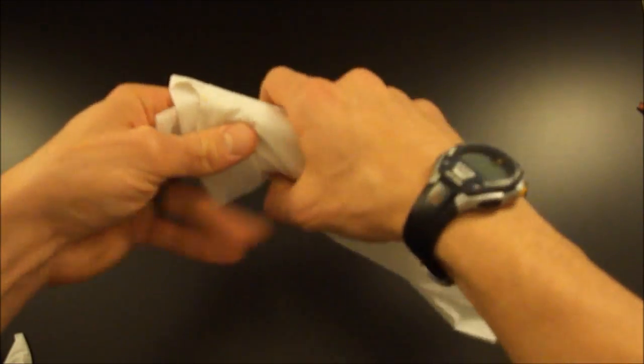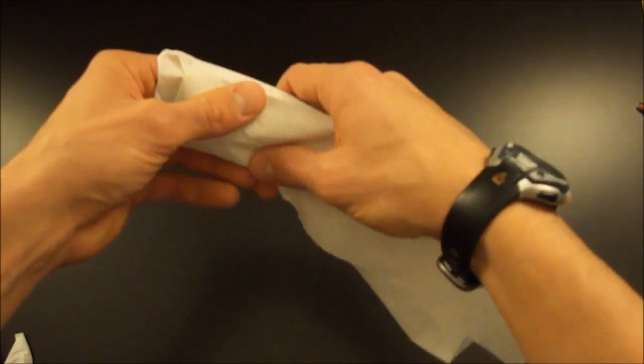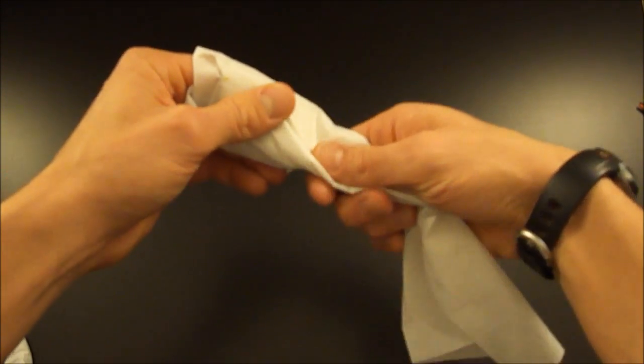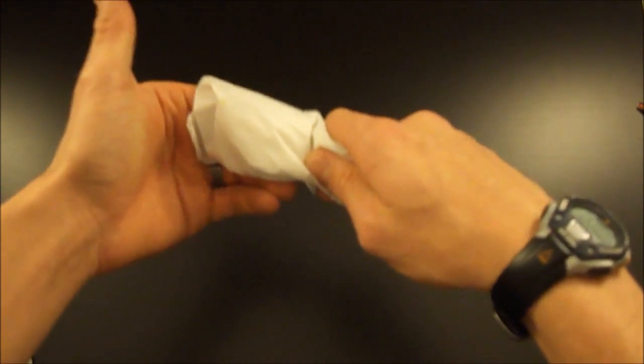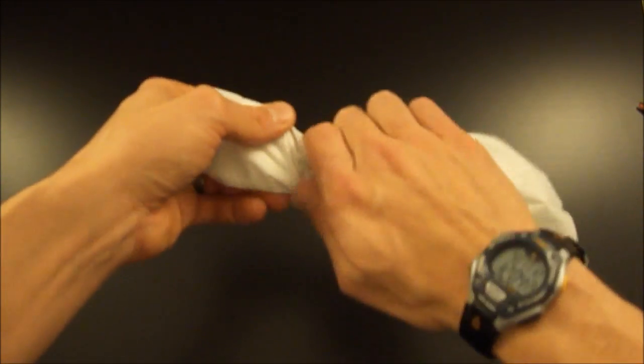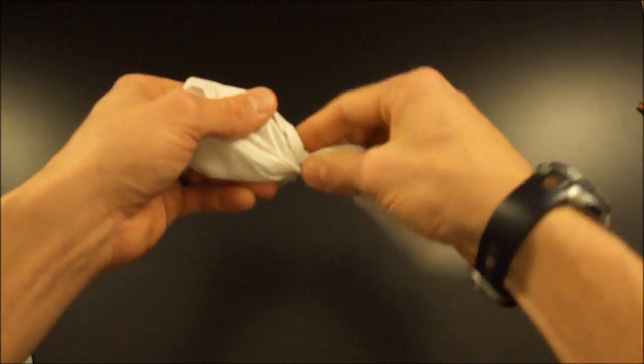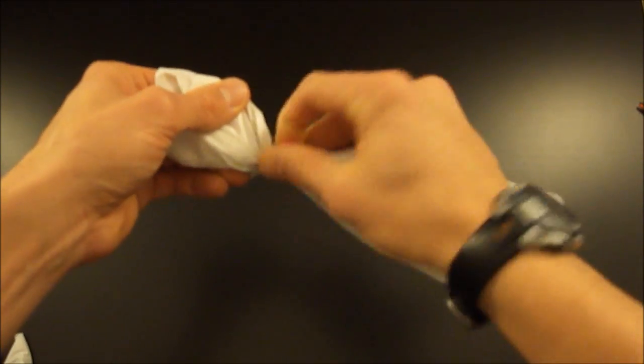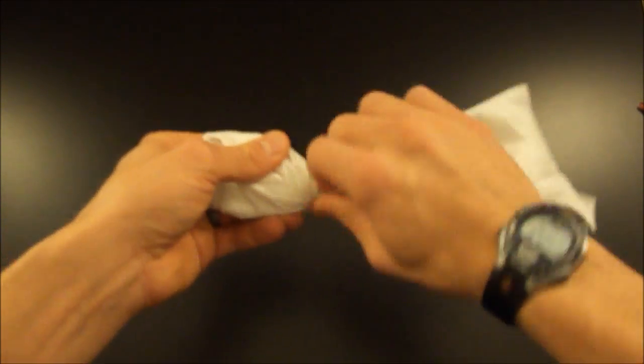You're going to be pulling it down, making sure everything is relatively even. I mean, it is a napkin, so it isn't going to be perfect, but try the best you can. While we still have our fingers in the flower, we're going to be twisting the bottom. This is starting the stem. Just twist at the bottom of the petals.